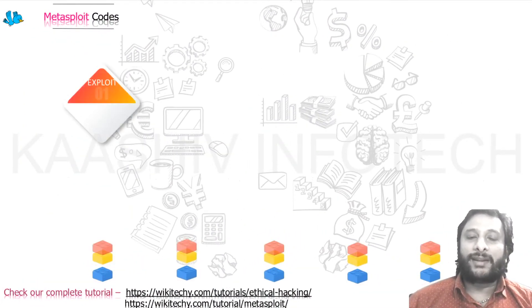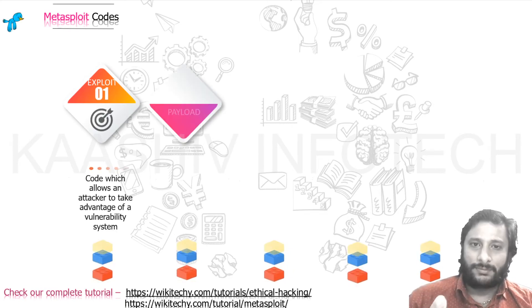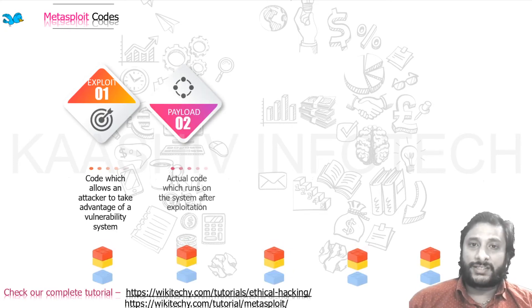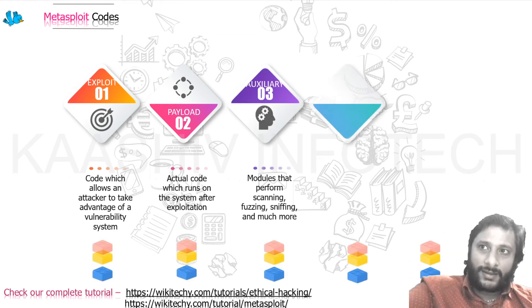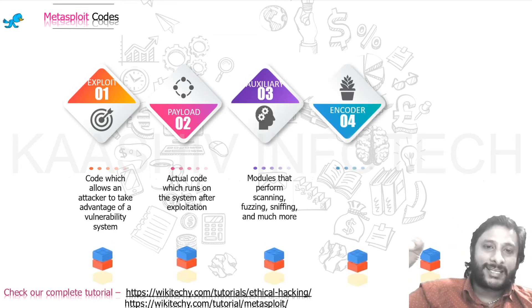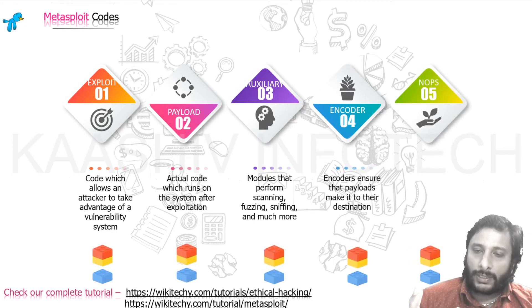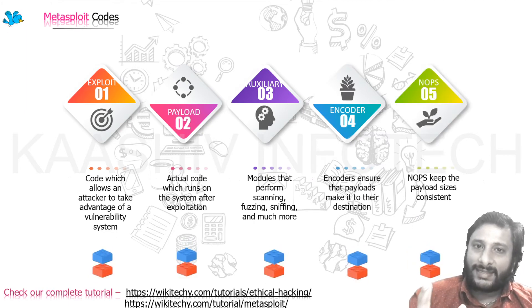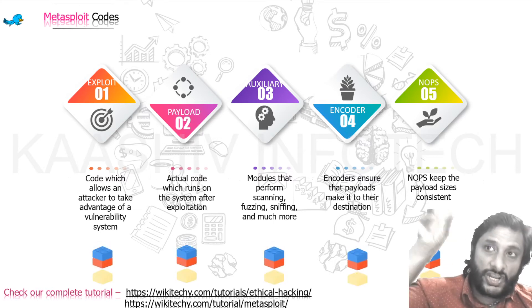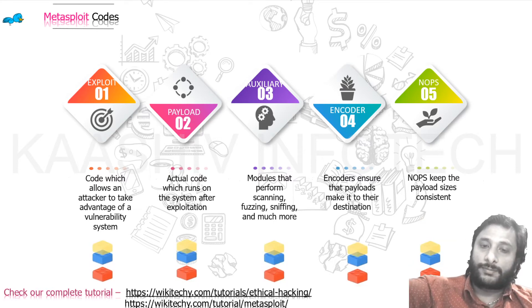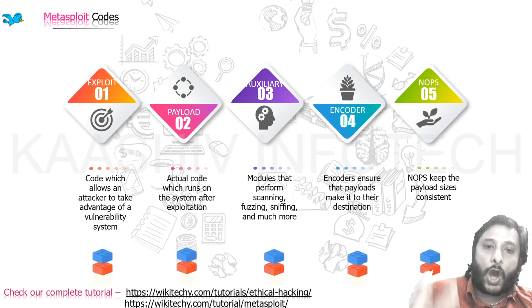Now let's talk about the Metasploit code. First is exploit — creating a package, identifying the weakness, exploiting it, and creating a payload. That is the real exploitation code which is going to run in the destination machine. And what is the way of attacking? That is your auxiliary.